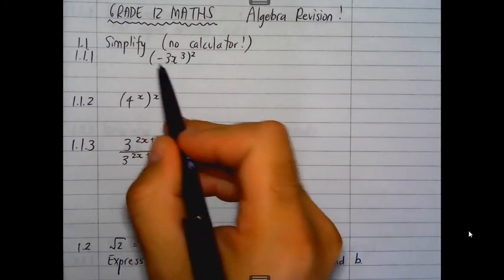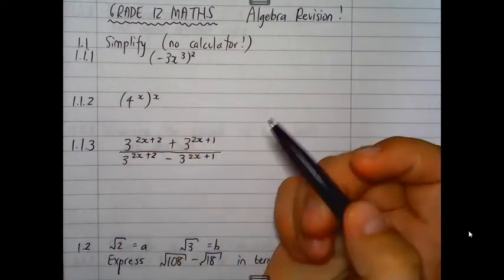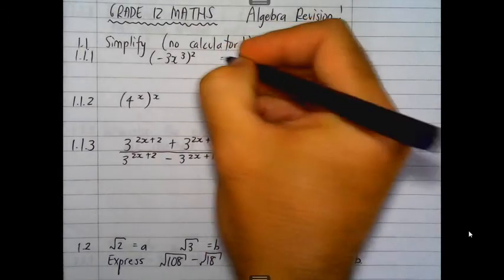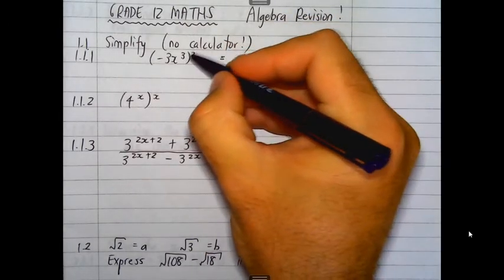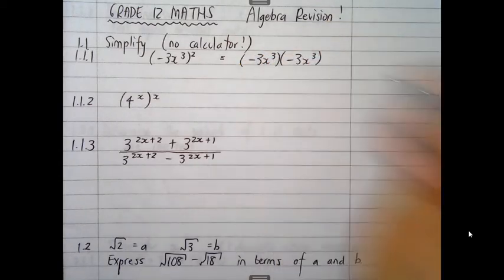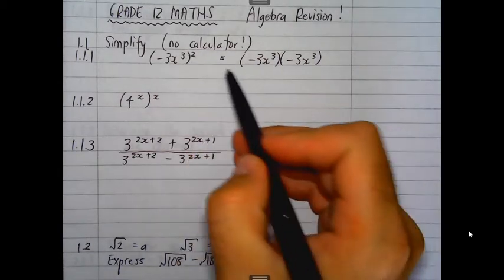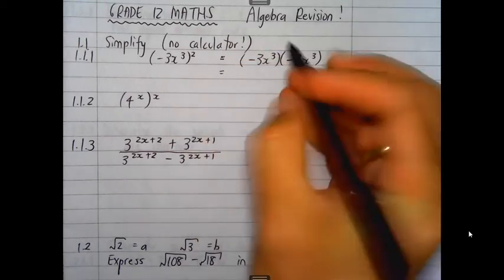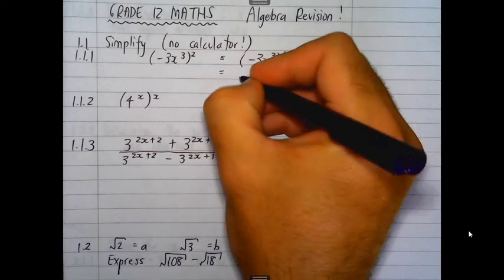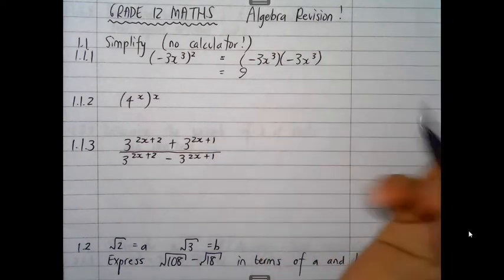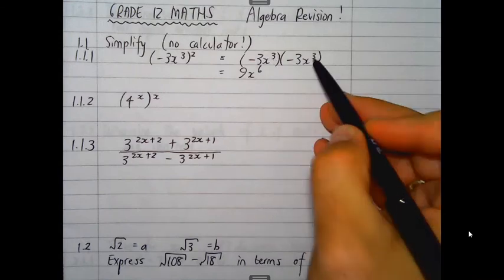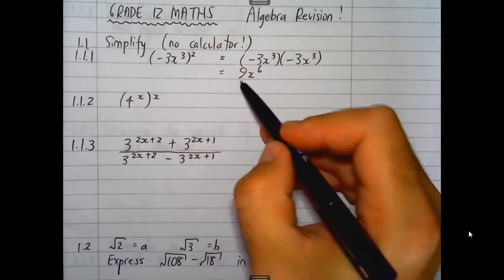The first part, 1.1, asks you to simplify various expressions without your calculator. Question 1.1.1 gives you brackets of negative 3x cubed, all squared. We need to get rid of these brackets. That square means there are two of those brackets. Negative 3 times negative 3 is positive 9. x cubed times x cubed — when the bases are the same and you're multiplying, you add the exponents, so 3 plus 3 is 6. Answer: 9x to the power 6.